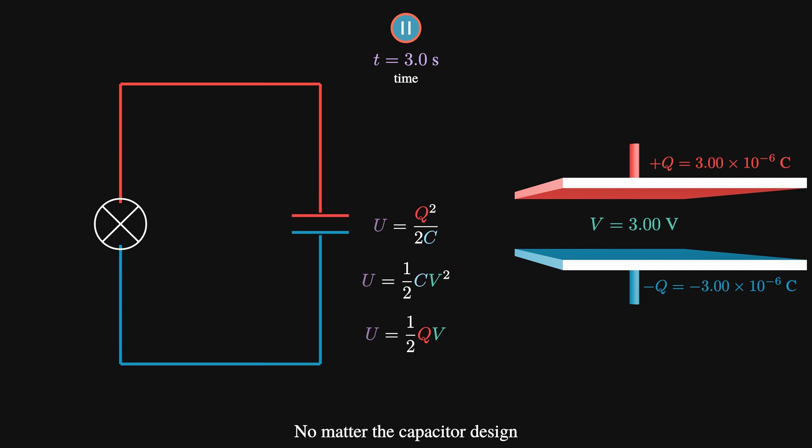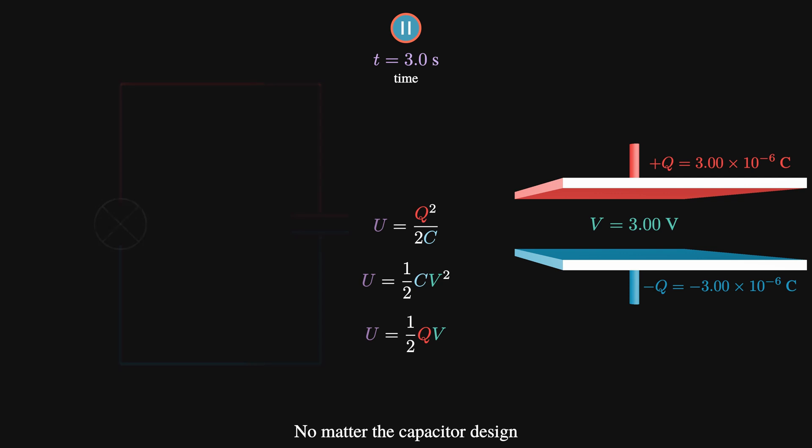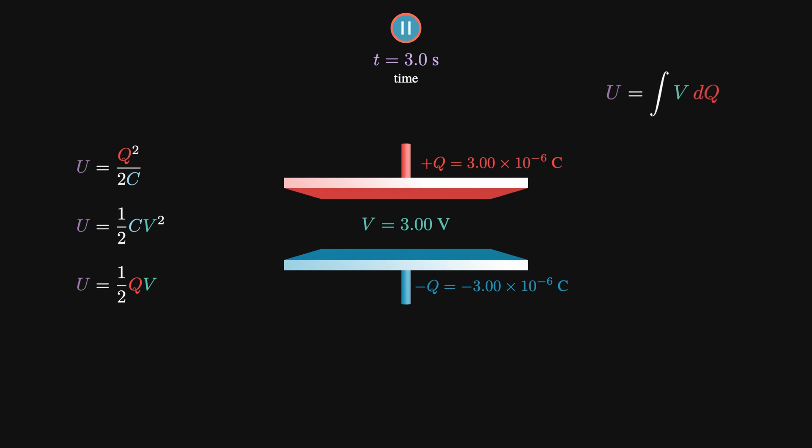But why? Why are these the equations for the energy of a capacitor? Well, a much neater way of considering the integral of V with respect to DQ is by plotting the graph of the voltage versus the charge in the plates. As we know, this ratio is constant, equal to 1 over C, which is the gradient of this straight line we've drawn.